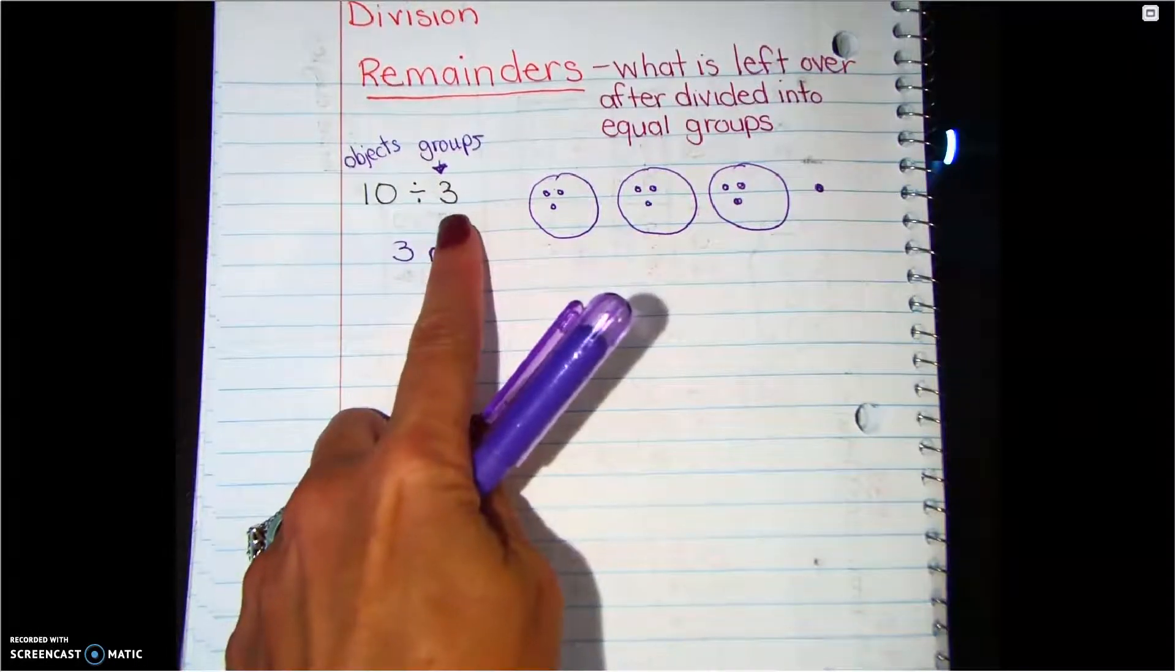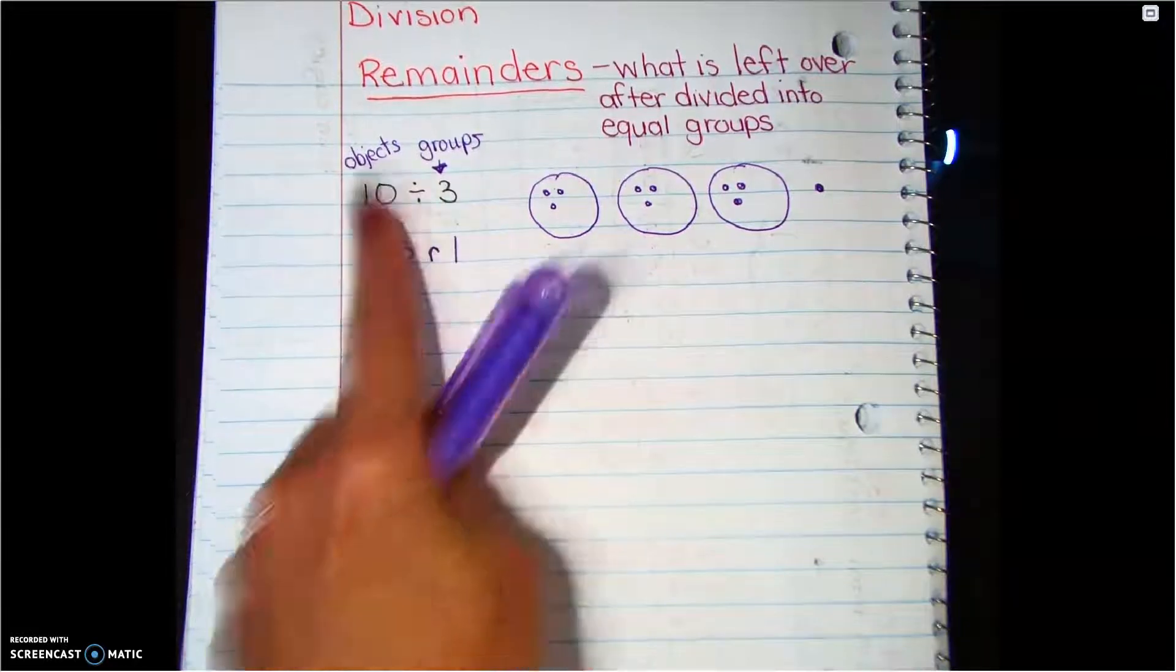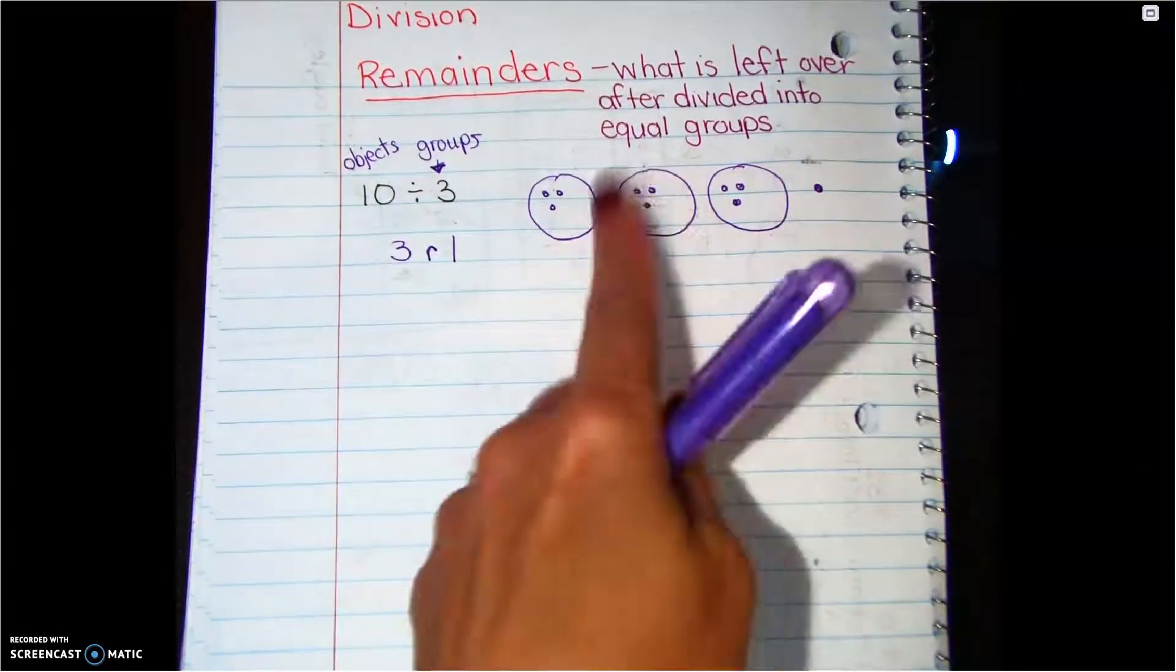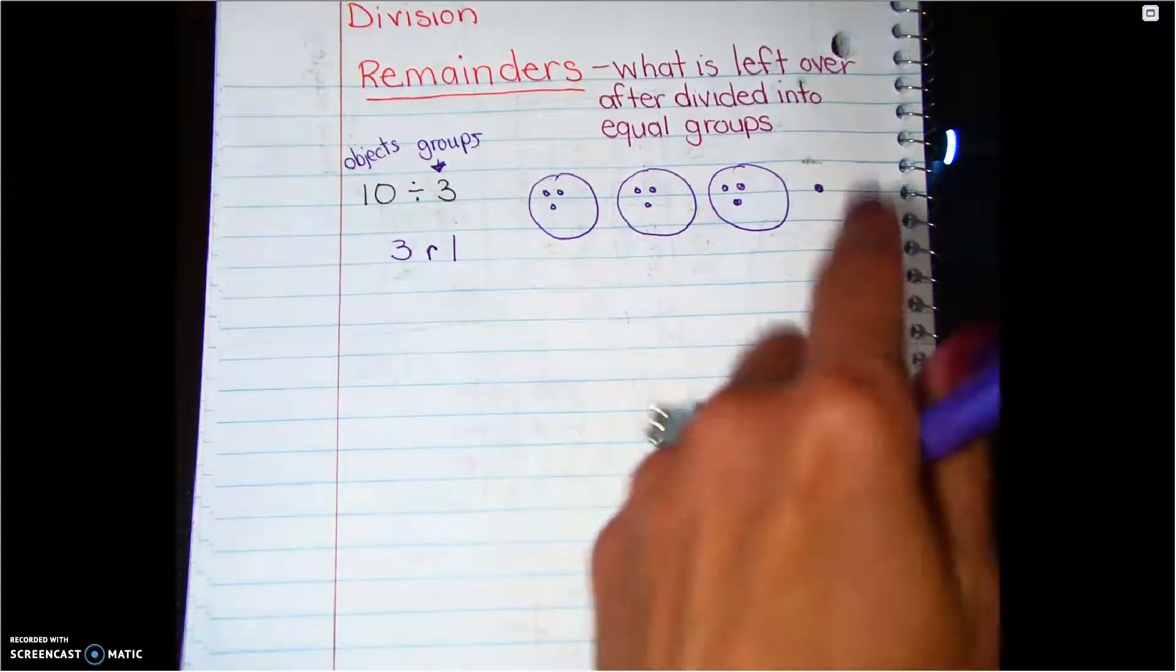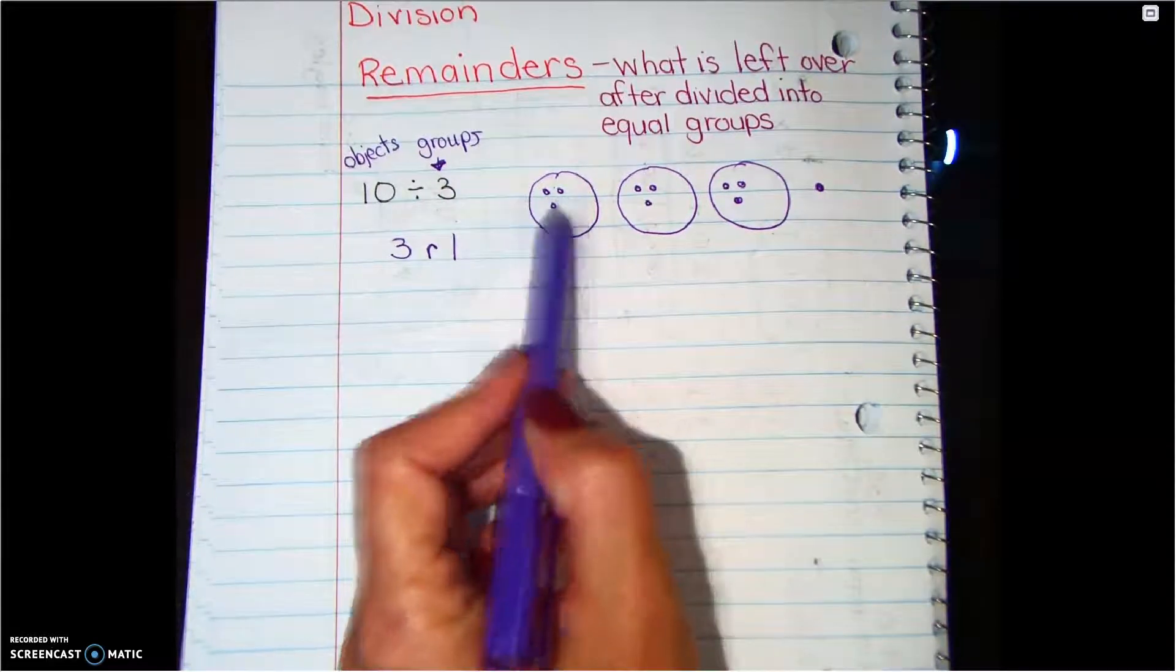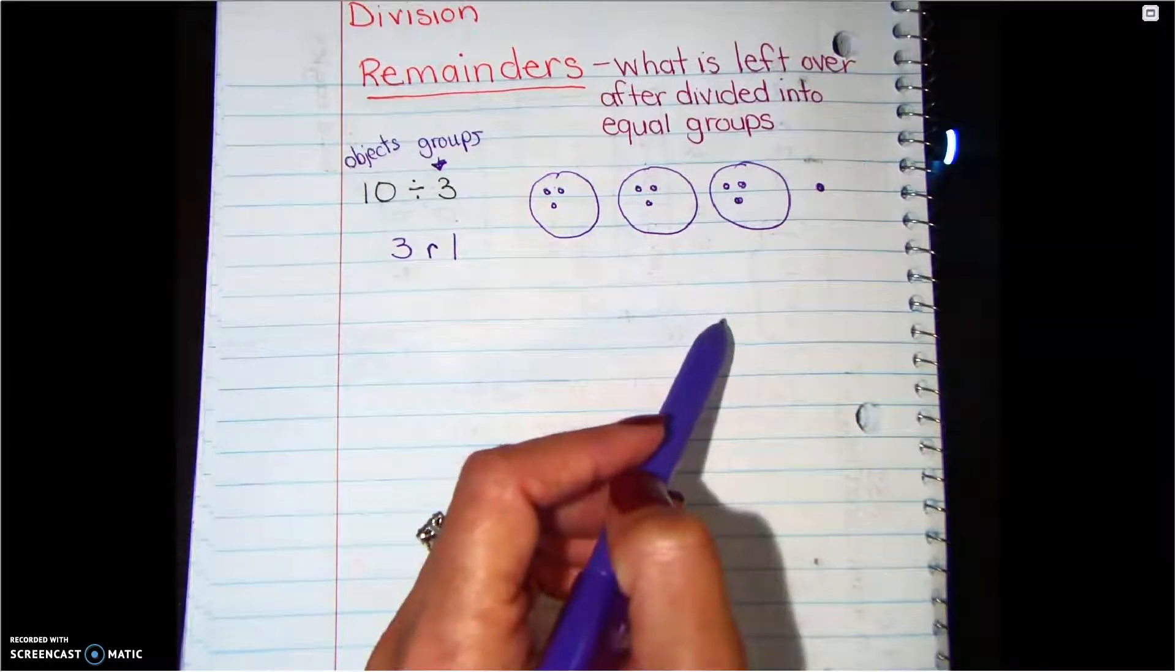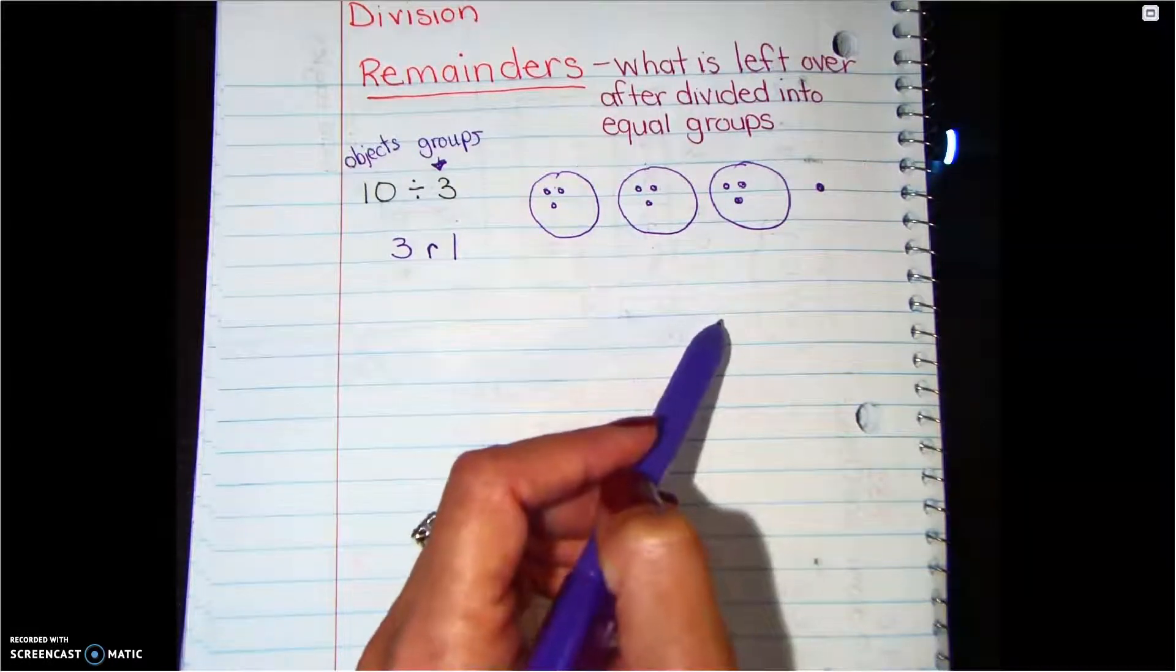The thing to remember is this number right here is how many groups you draw, and this number is how many you have to fair share out. Now when we're doing these, we have to make sure that we don't get confused with how many numbers we're putting in here, and that's what I see a lot of students, they forget their count. So that's one thing that we want to practice here.